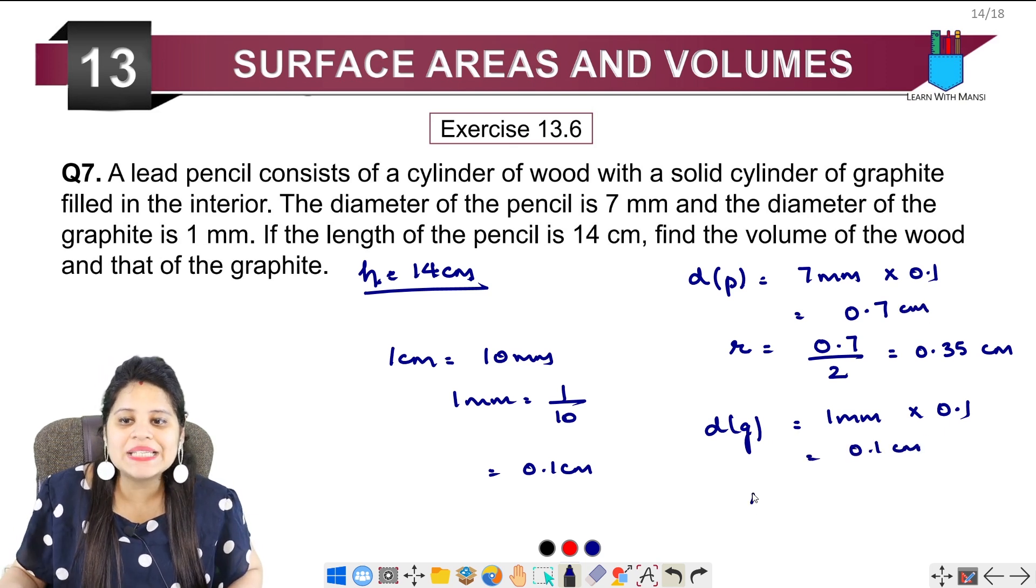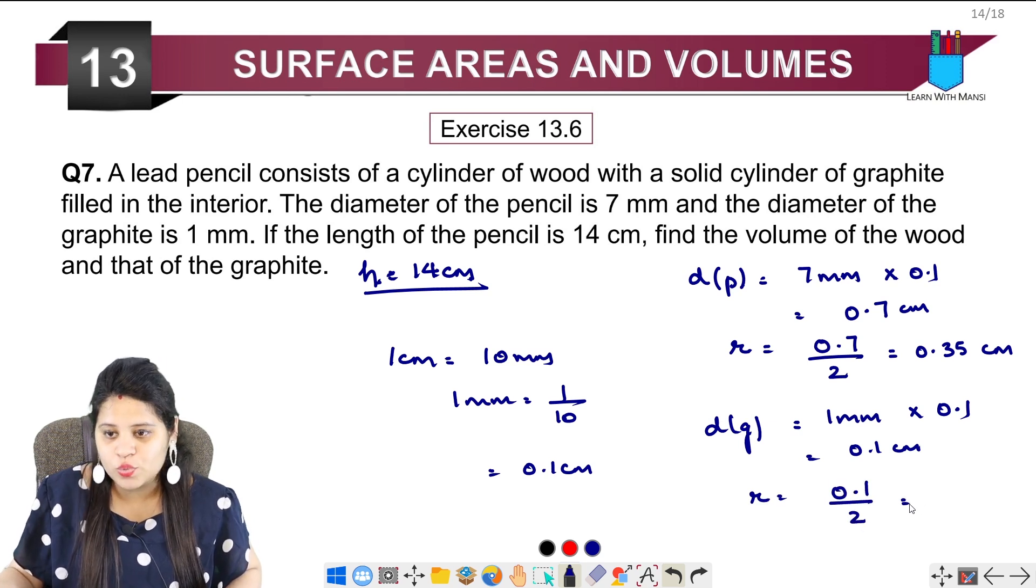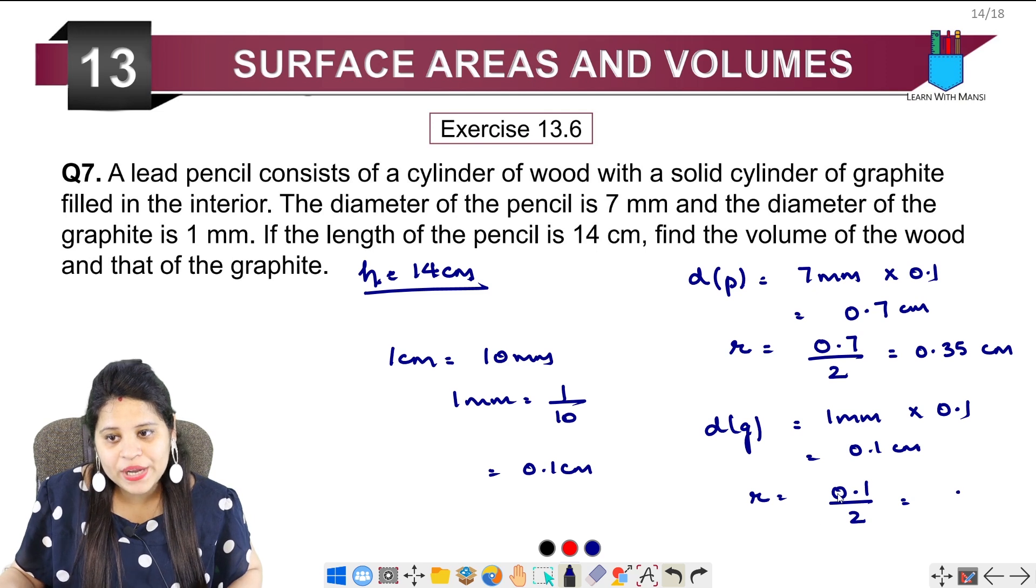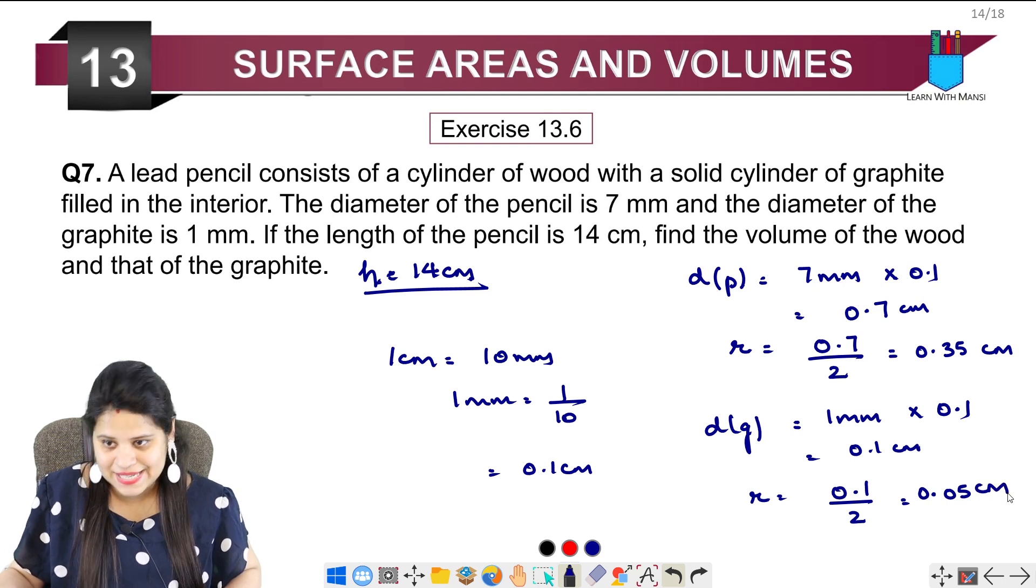If we divide it from the radius, then it will be 0.1 upon 2. So it will be 0.05cm.